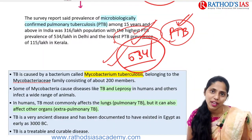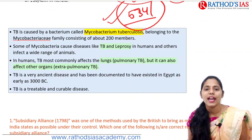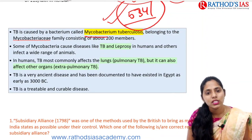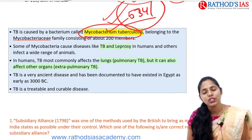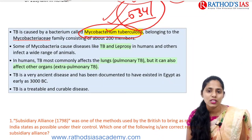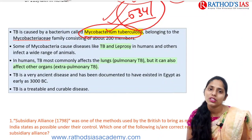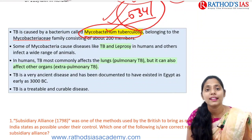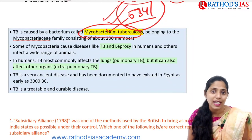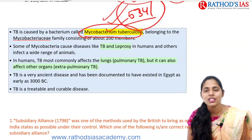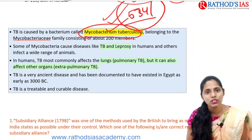Some facts about TB: it is caused by Mycobacterium tuberculosis, belonging to the Mycobacteriaceae family. The same family includes Mycobacterium leprae, which causes leprosy. TB most commonly affects the lungs, known as pulmonary TB, but also affects other organs, called extra-pulmonary TB — even the eyes can get TB. TB is a very ancient disease, documented in Egypt as early as 3000 BC. It is a treatable and curable disease, but the course of antibiotics is more than six months long.